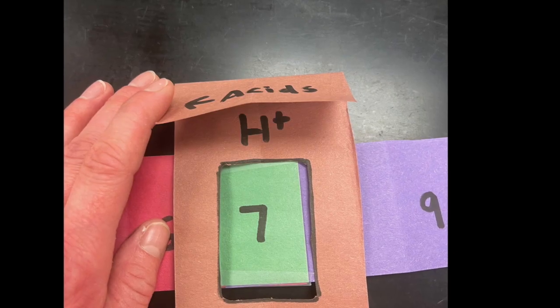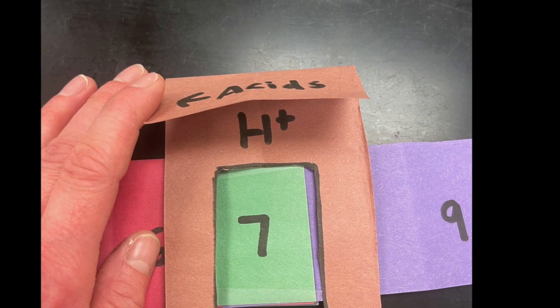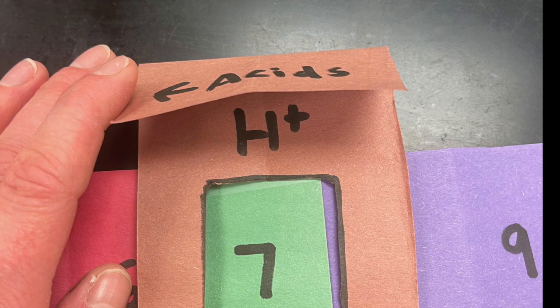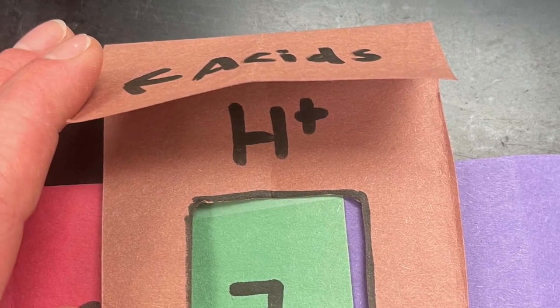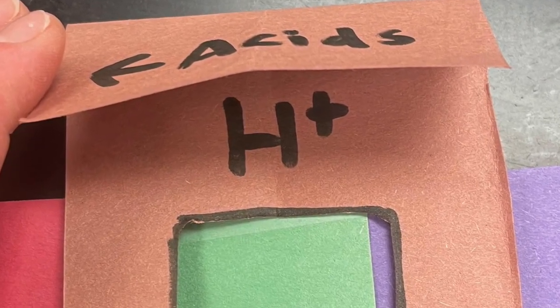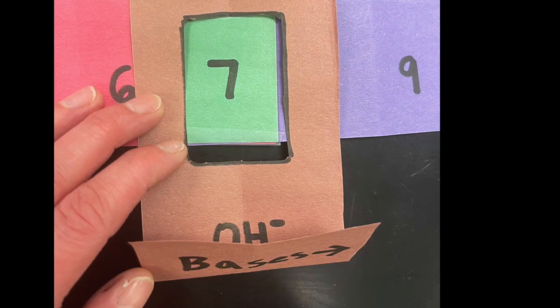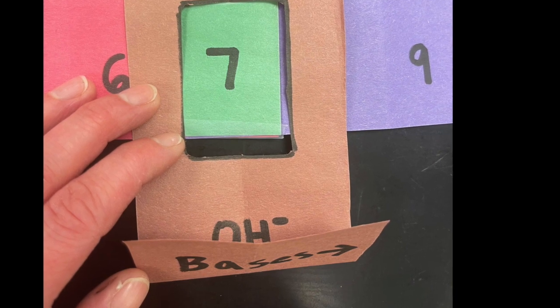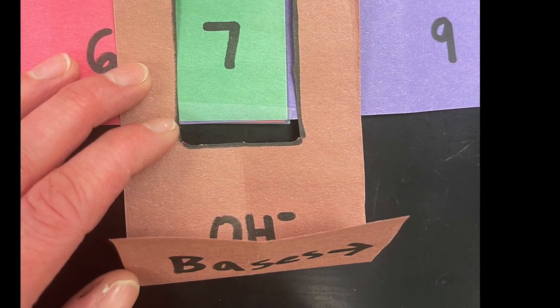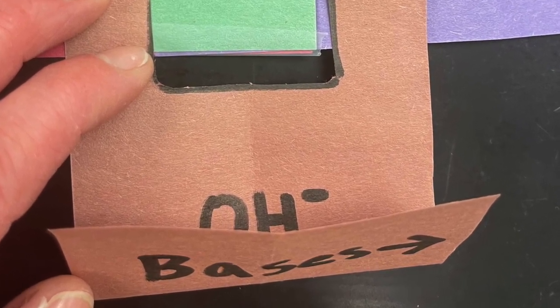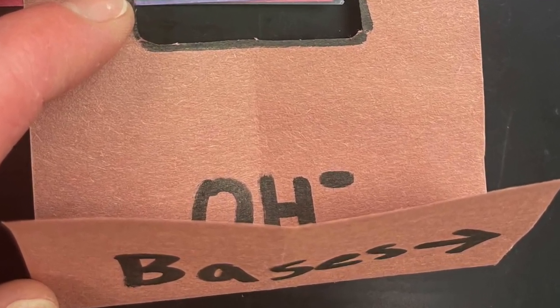Then underneath the acids flap, I want you to write a capital H with a superscript plus sign standing for the hydrogen ion because that's what defines acid. Acids have more hydrogen ions in solution compared to the ion we're going to talk about next associated with bases. When you flip up the flap underneath bases I want you to write OH minus so capital O capital H superscript negative sign and that stands for the hydroxide ion. Bases have a higher concentration of hydroxide relative to hydrogen ions in a solution.